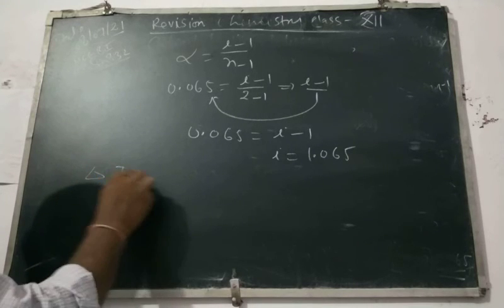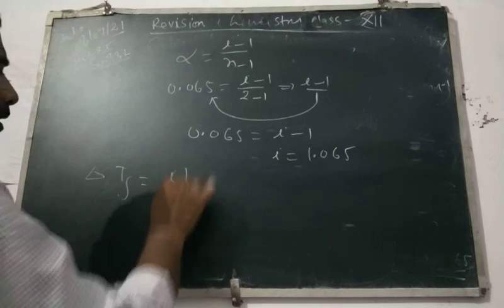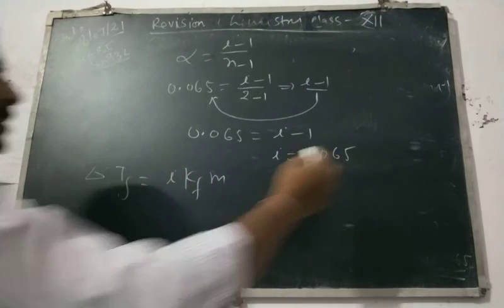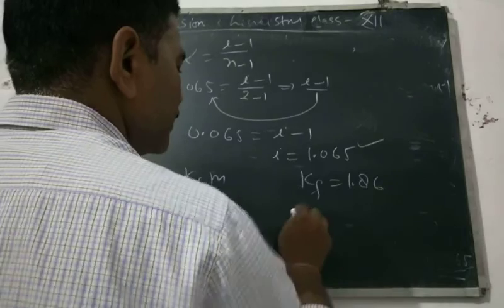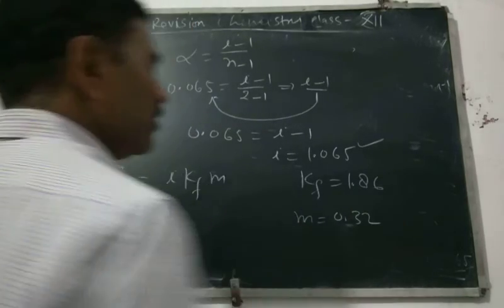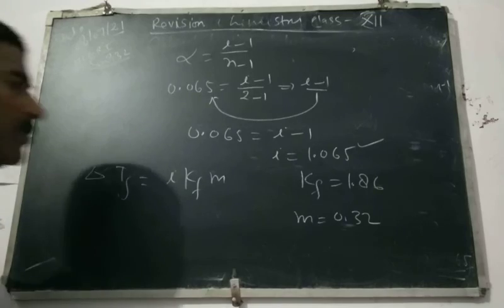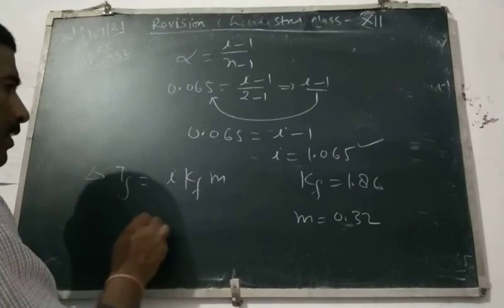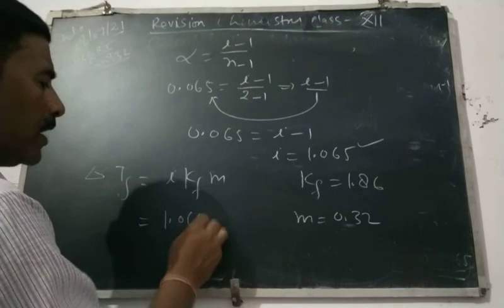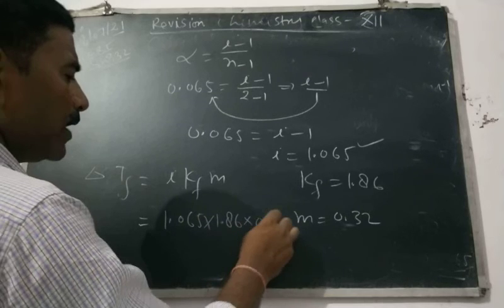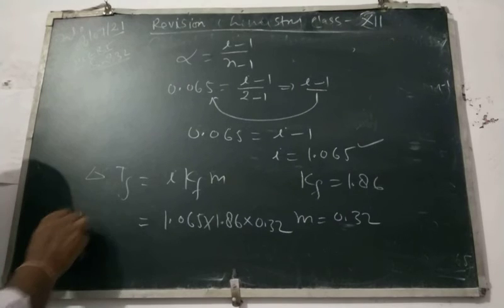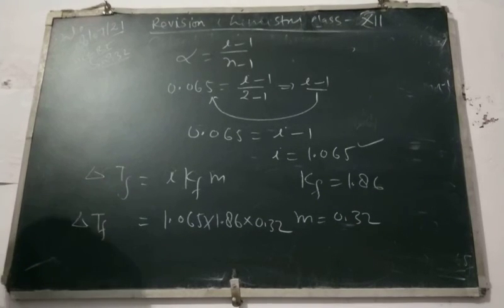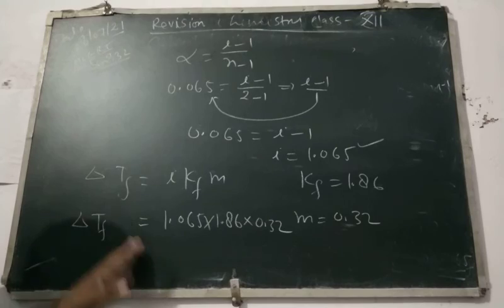I निकल गया। जब i निकल गया, यहाँ पर Kf दिया है और concentration भी निकाल लिए हैं। Delta Tf = i × Kf × molality. ध्यान दीजिए — i = 1.065, Kf = 1.86 (given in question), molality = 0.32. So ΔTf = 1.065 × 1.86 × 0.32. इस value को solve करने पर depression in freezing point की value मिल जाएगी, जो degree Celsius में रहेगी।